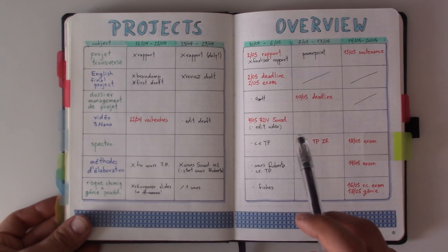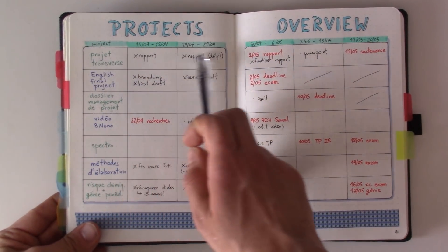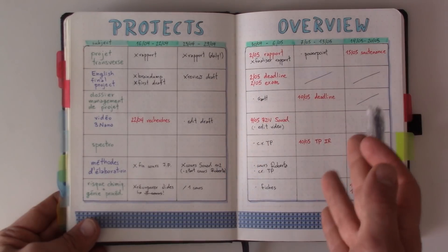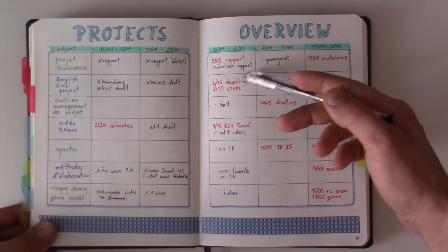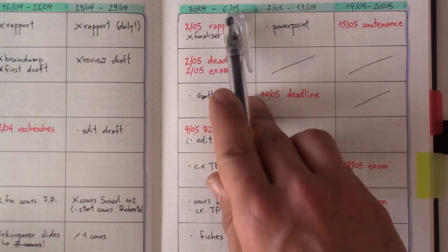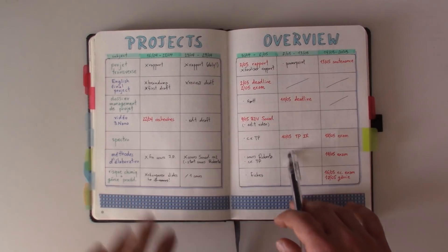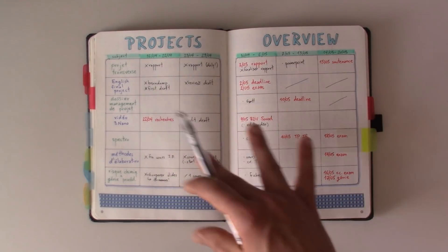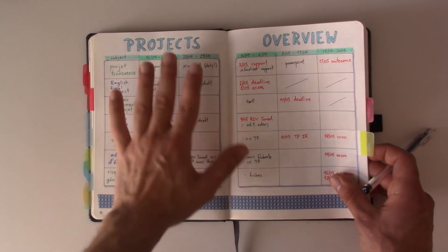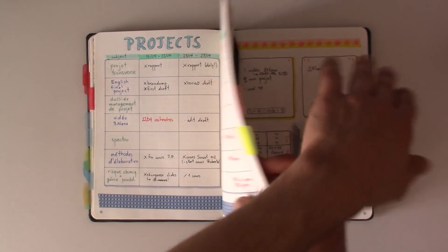What I really like about this spread is that you can focus on a single project by reading across a row, but you also have a weekly overview of everything you have to do across all projects by reading down a column. For example, looking at the week of the 30th of April to the 6th of May, I can see I have four deadlines and all the tasks I'd like to do. I've been reviewing this projects overview at least once a week — whenever I plan for a new week I come back to this spread, see what I have to do, and move the relevant tasks to my weekly spread.